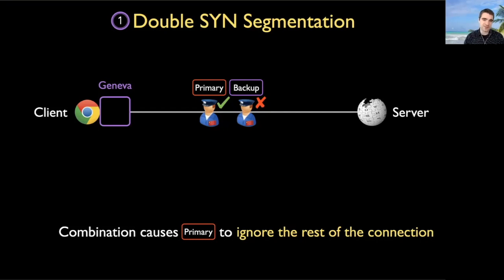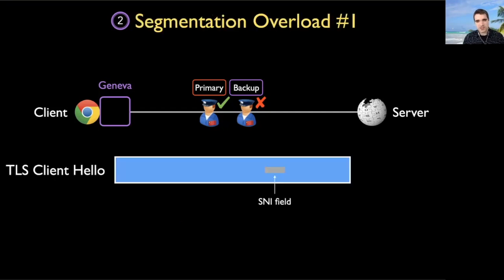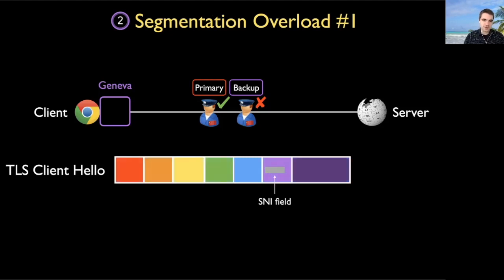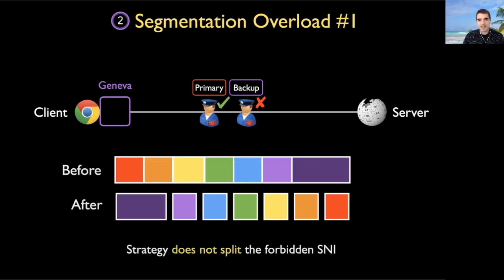In the next strategy — called segmentation overload — it works purely by performing TCP segmentation of the TLS client hello. Geneva discovered that it could segment this request into seven segments and, if rearranged in just the right way, bypass the primary censorship middlebox. The gray box in this diagram is the position of the SNI field — wikipedia.org. When arranged in this specific ordering, this disables the primary with 100% reliability without affecting the backup middlebox. Geneva actually found dozens of segment orderings that have this property of defeating the primary without defeating the backup.